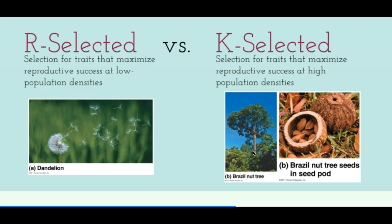The next topic is r-selected versus K-selected strategies, regarding the number, size, and parental care of offspring. R-selected strategies usually occur when there's a very low chance of survival for offspring in the environment — for example due to high predation rates or a harsh environment. The result is that organisms produce many small offspring with little parental care, which doesn't cost much energy. Because so many small offspring are produced, a few are likely to survive. This works well at low population density, as with dandelions spreading seeds through air to distant places.